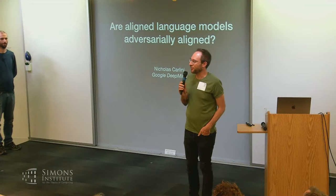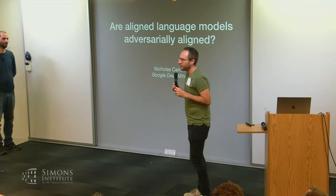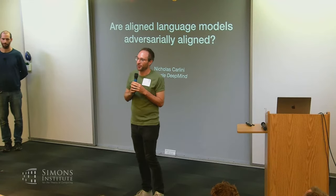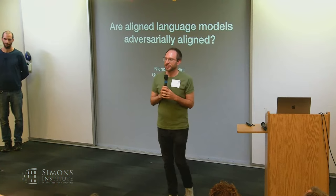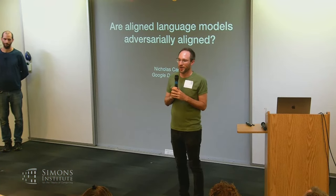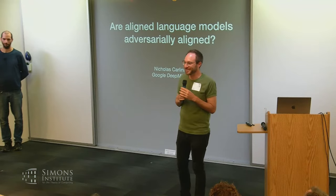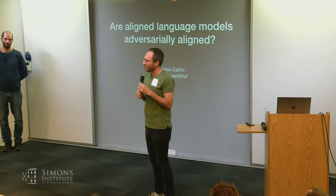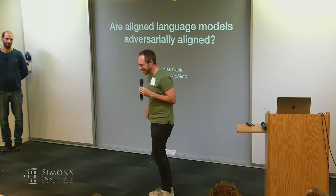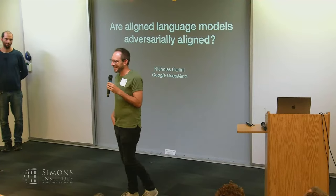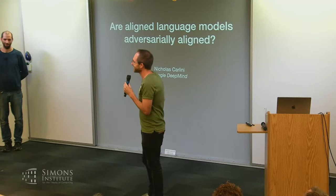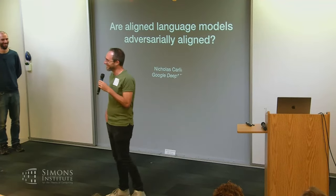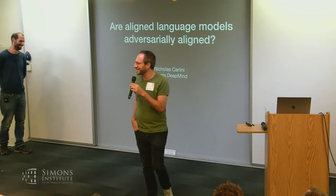Welcome to our last session for the day. Our first speaker will be Nicholas Carlini. Nicholas is a researcher at Google, and he's known as one of the leading experts on security, privacy, and robustness for deep learning models. Nicholas was a PhD student here at Berkeley. There's been lots of stuff on Twitter about how he's been using GPT to write his papers, which is going to be a fun topic for the academic community in coming years. Let's welcome Nicholas.